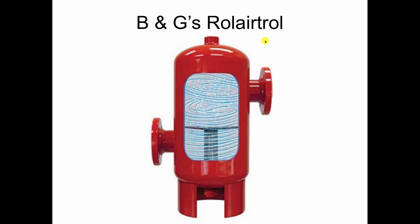Bell and Gossett years ago came up with what they call the Roll Air Troll, which has a tangential opening on the side — in and out — so when the water comes in it spins in a whirlpool. They have a baffle in the center so the water has to squeeze by the edge of the baffle to go through the strainer and get out. In doing so, it has the least amount of air in it, because spinning like a vortex makes the lighter air go to the middle and the heavier water, which has less air, go to the outside. So these are all common air separators that you'll see out in the field.